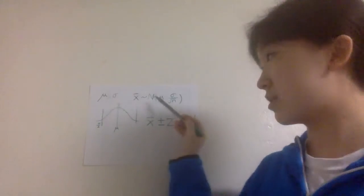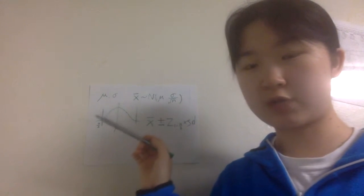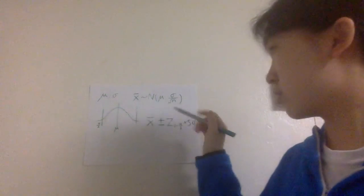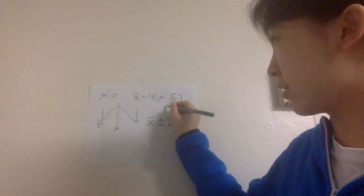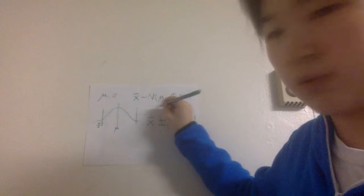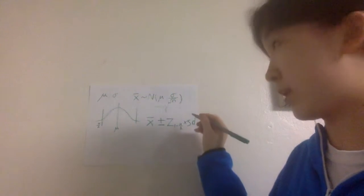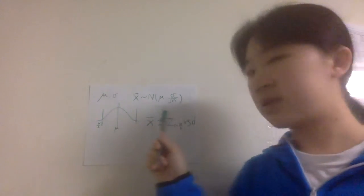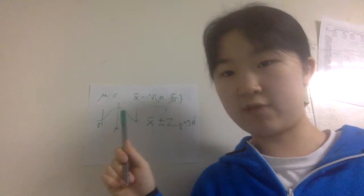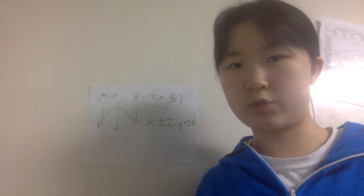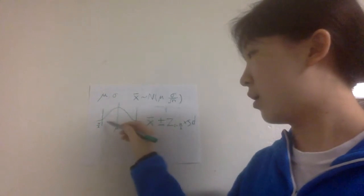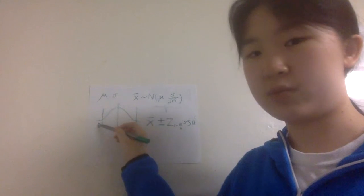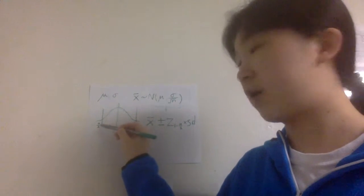Because x-bar is centered at mu, it makes sense to construct your interval symmetric with respect to x-bar. If x-bar is a value here, you want to expand it in both directions so that the interval will contain your population mu. Given a confidence level of 1 minus alpha, we are tolerating an error of proportion alpha. Because the confidence interval is symmetric, on both tails — which is the error — should be alpha over 2.